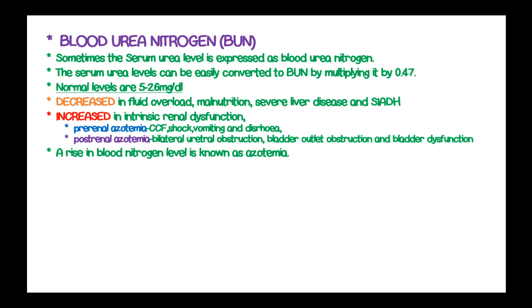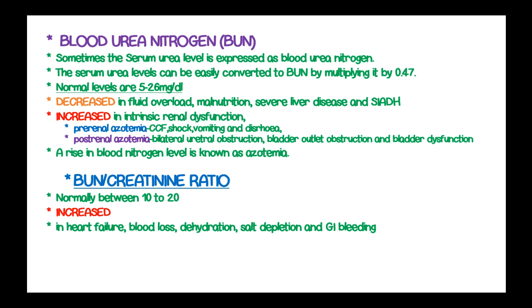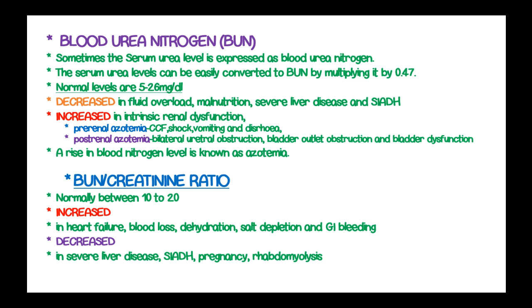Azotemia refers to the rise in blood nitrogen levels. The normal BUN to creatinine ratio lies between 10 and 30. This ratio is decreased in conditions such as syndrome of inappropriate antidiuretic hormone, pregnancy, and rhabdomyolysis.